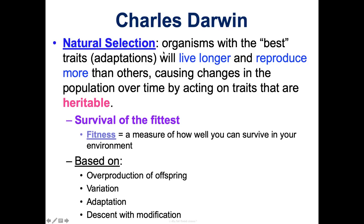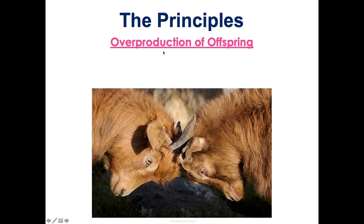Darwin summarized his observations into four principles that explain how natural selection works. First is overproduction of offspring: lots of offspring and limited resources causes competition for those resources. Populations don't just increase indefinitely in nature — they stay in a stable range because there's a limited amount of resources, not enough food or habitat for everyone to survive — and this creates competition.